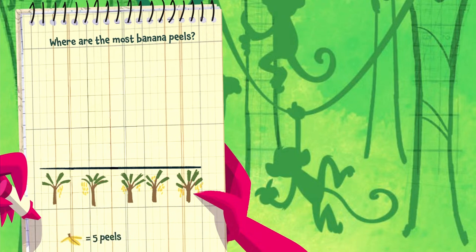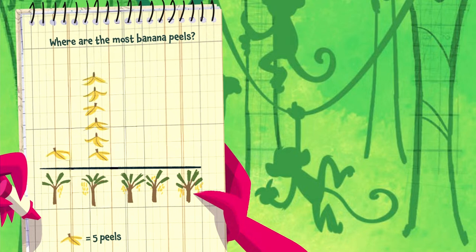There are five peels under the first tree — that's one banana peel drawing. The second tree has 30 peels underneath it — that's 5, 10, 15, 20, 25, 30 — six banana peel drawings.